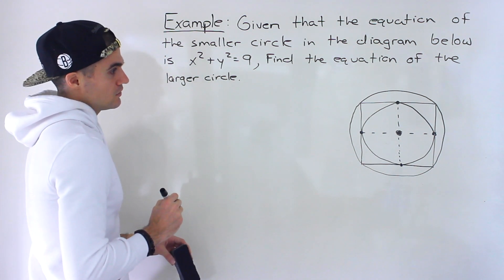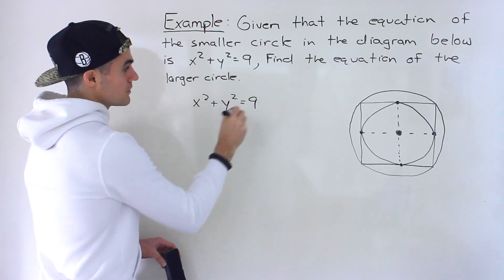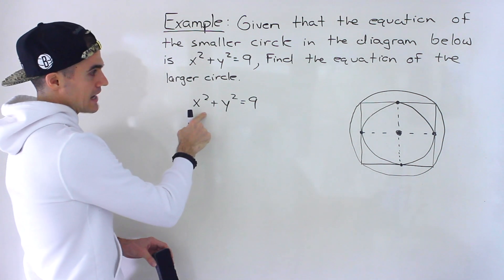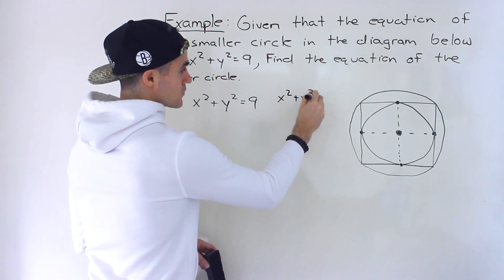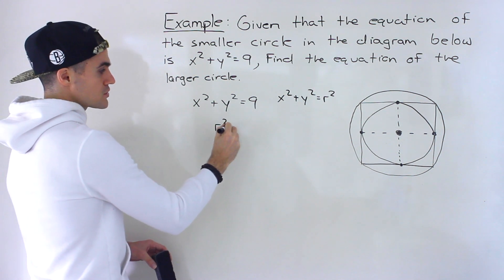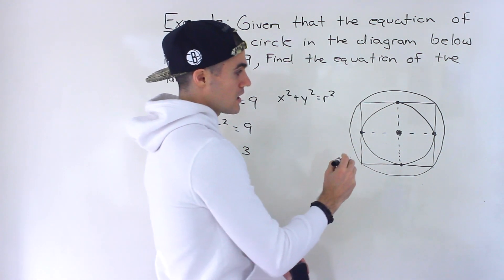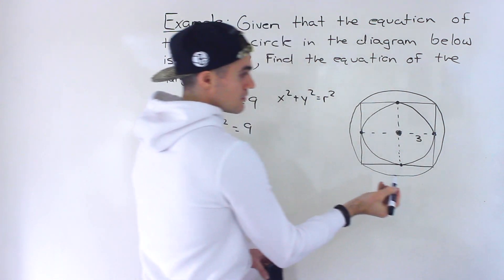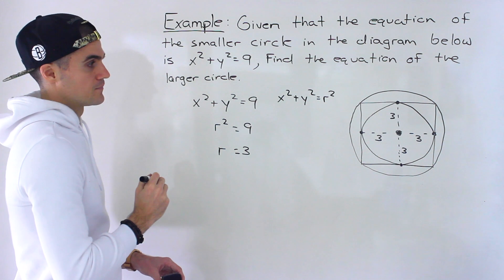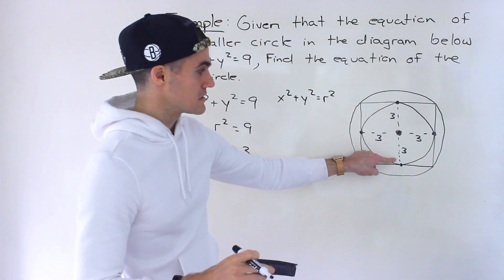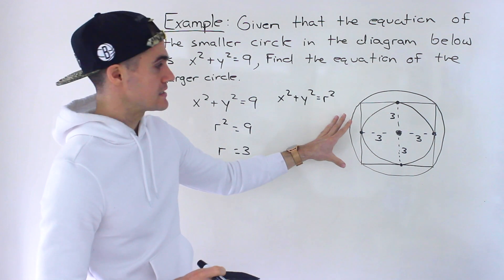For the smaller circle, the equation is x squared plus y squared equals 9. From the general form x squared plus y squared equals r squared, we know r squared equals 9, so the radius of the smaller circle is 3. That means each of those four radii shown in the diagram is 3, and the diameter of the smaller circle is 6. So the length and width of the square are also 6.